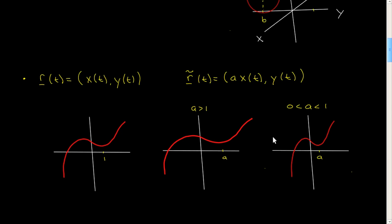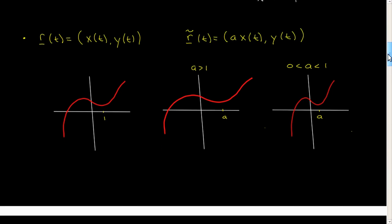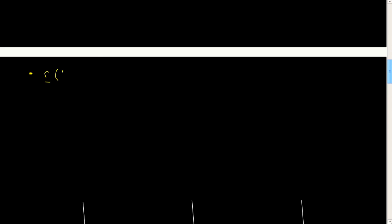We can manipulate Y in the same way. One of the most useful ways in which one sees this is the ellipse. The usual, most common parameterization of the ellipse is (A cos T, B sin T), with T in [0, 2π]. This is an ellipse.